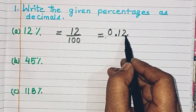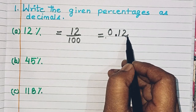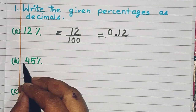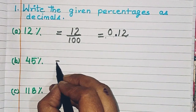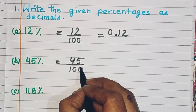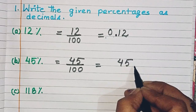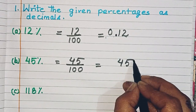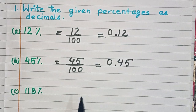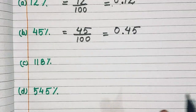These two places go — 1 and 2 — and we put the point here. So 12% becomes 0.12.